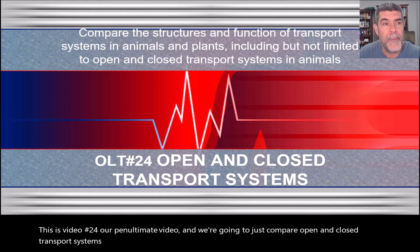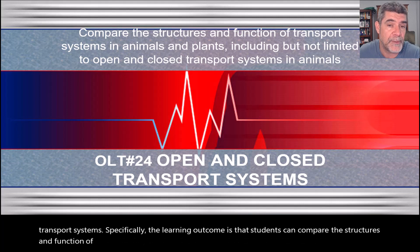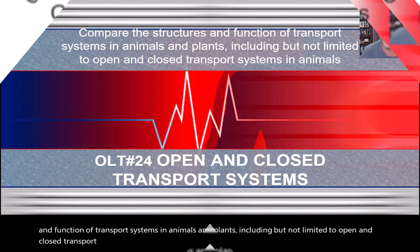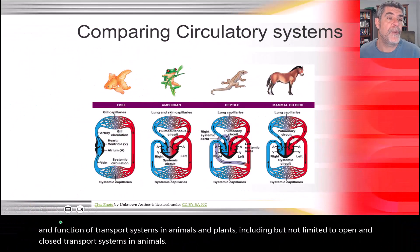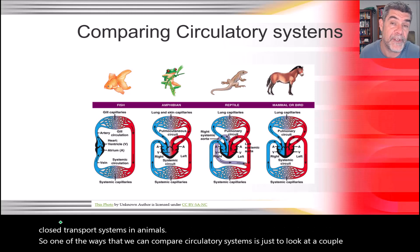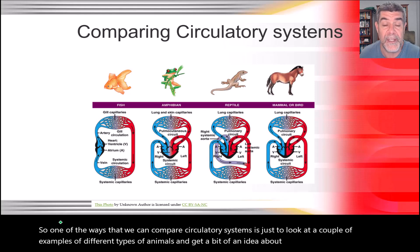The learning outcome is that students can compare the structures and function of transport systems in animals and plants, including open and closed transport systems in animals. One of the ways we can compare circulatory systems is to look at a couple of examples of different types of animals and get an idea about what's going on in the systems of their bodies.